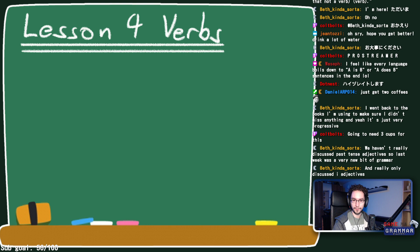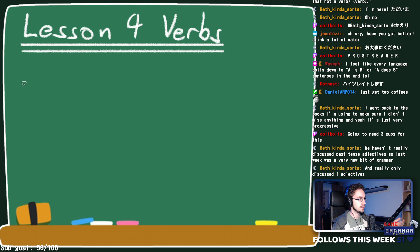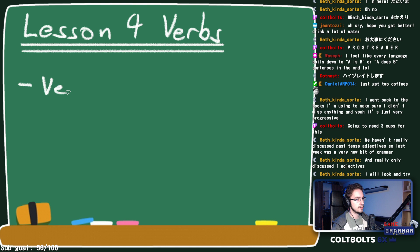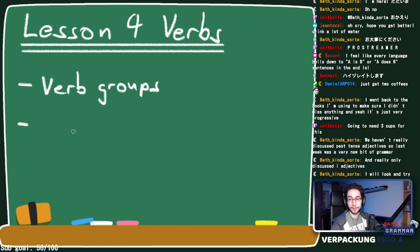Don't get too scared — we're going to talk about verbs a lot, but this is just chapter one, the intro to verbs. Today we're going to cover types of verbs, or verb groups, how to differentiate them, and some very basic conjugation.